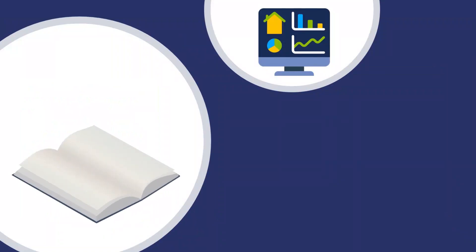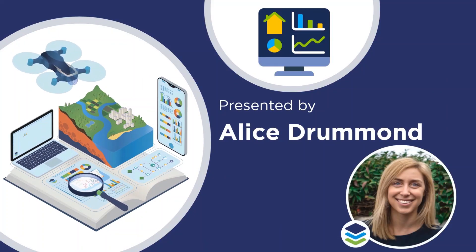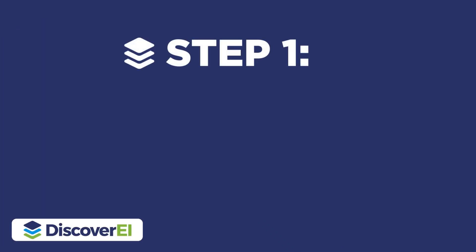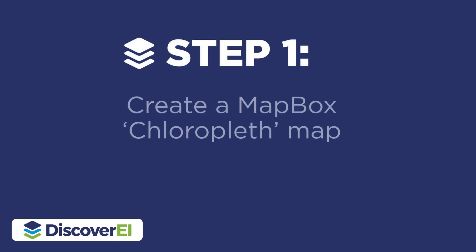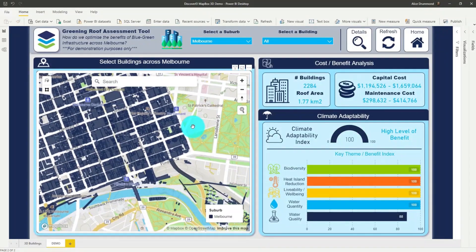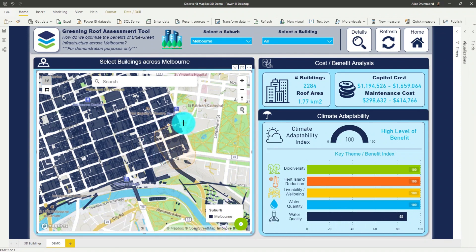I'm Alice from Discovery Eye and I'm pretty obsessed with Mapbox. The first step is to create a choropleth map using Mapbox. Here you can see we've got a choropleth map of buildings across Melbourne as part of our Greening the Roof assessment tool.